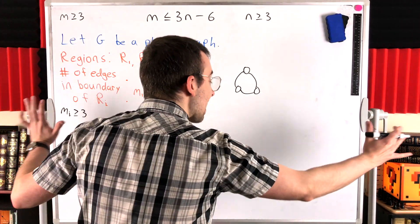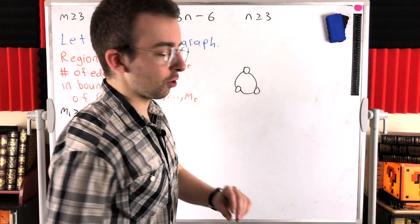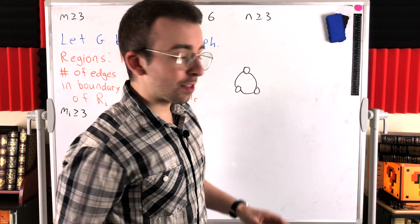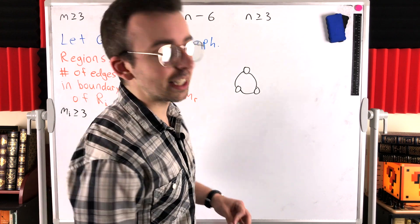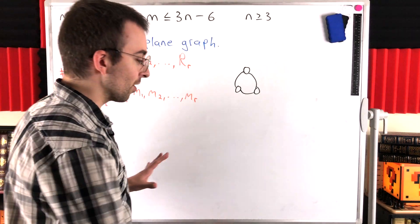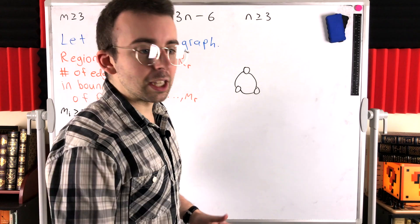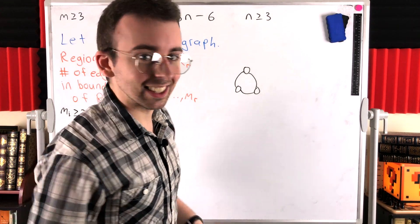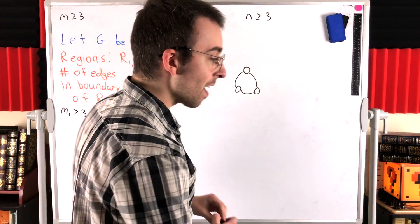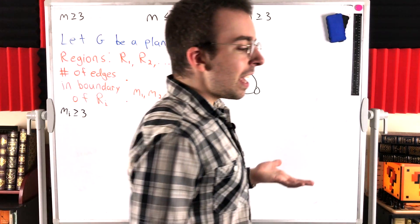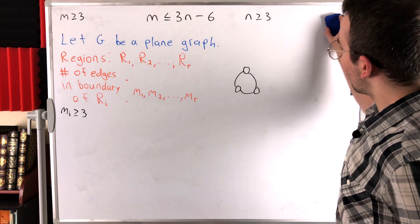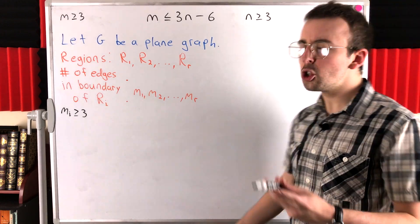So if a region isn't the external region, it's enclosed by a cycle with at least three edges — so Mi ≥ 3 for all interior regions. Now, what about the unbounded external region? I claim it also has at least three edges in its boundary. Suppose it doesn't — then the exterior region's boundary has either zero, one, or two edges.